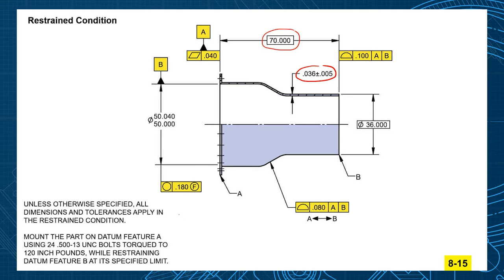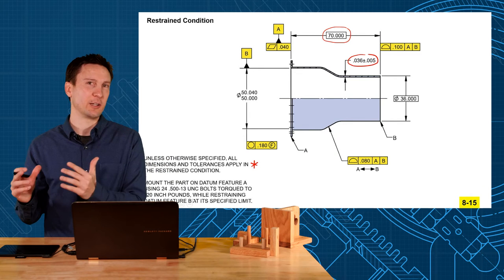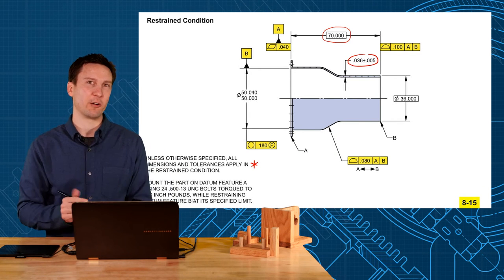So we have a note that says, unless otherwise specified, all dimensions and tolerances apply in the restrained condition. So then the following note states how you want it to be restrained: mount the part on datum feature A using 24 half 13 UNC bolts torqued to 120 inch pounds while restraining datum feature B at its specified limit. So you can see how exotic you can get with these notes and even go into more detail on this if you need to.